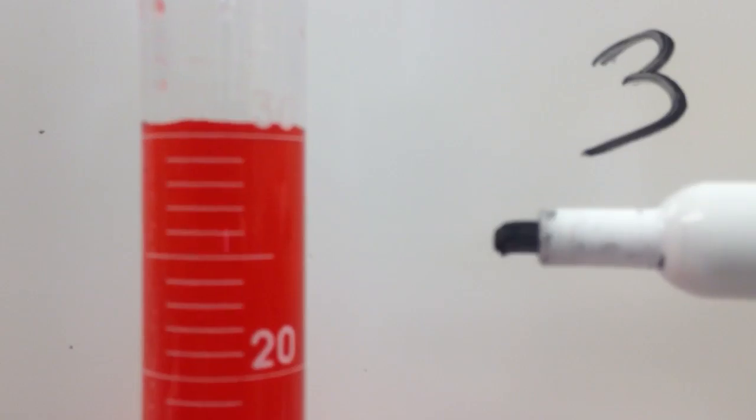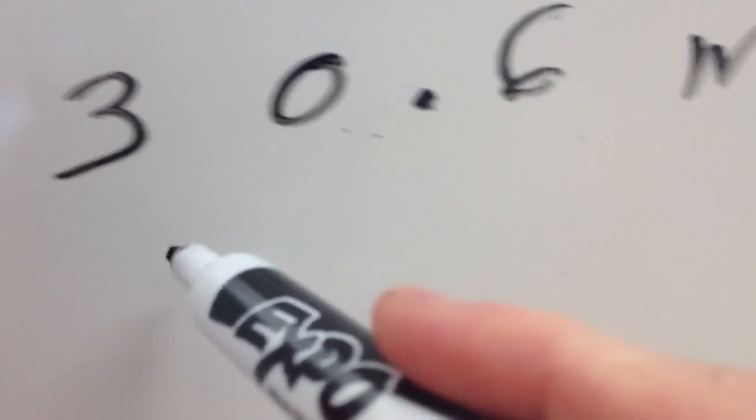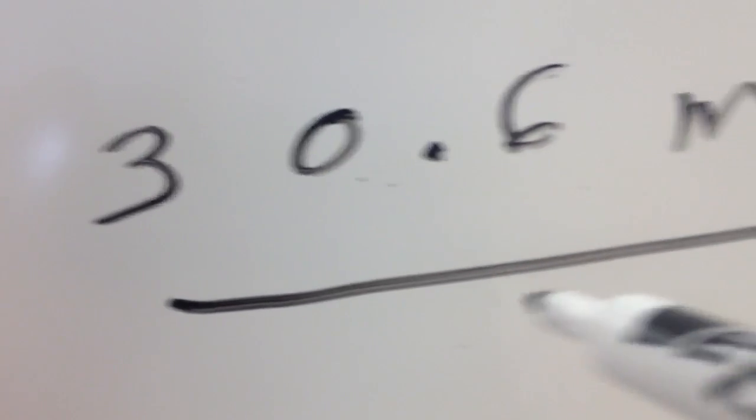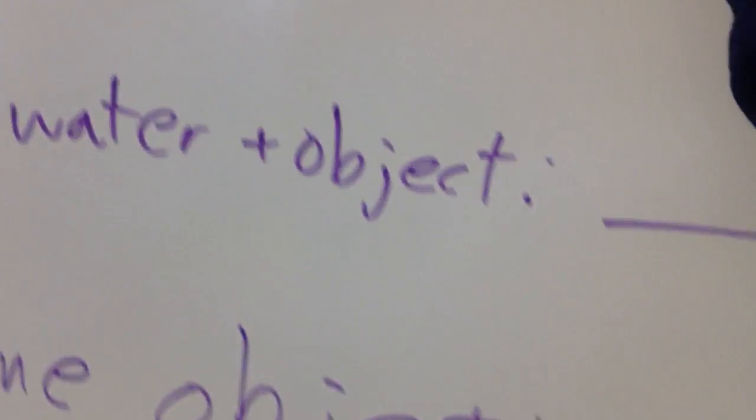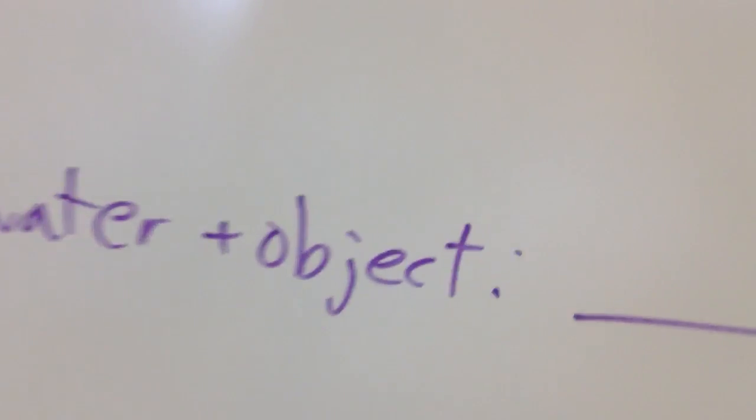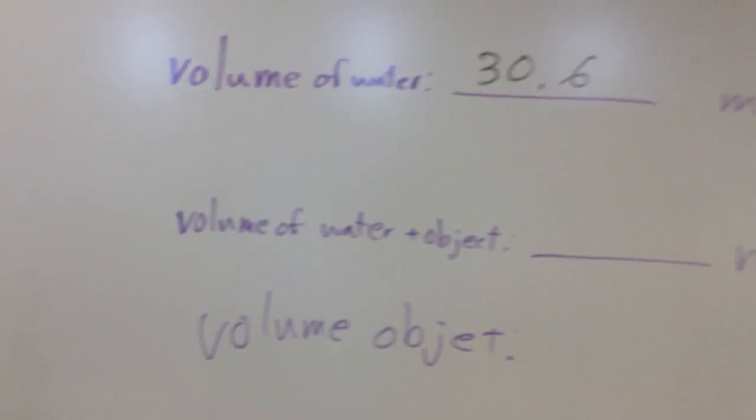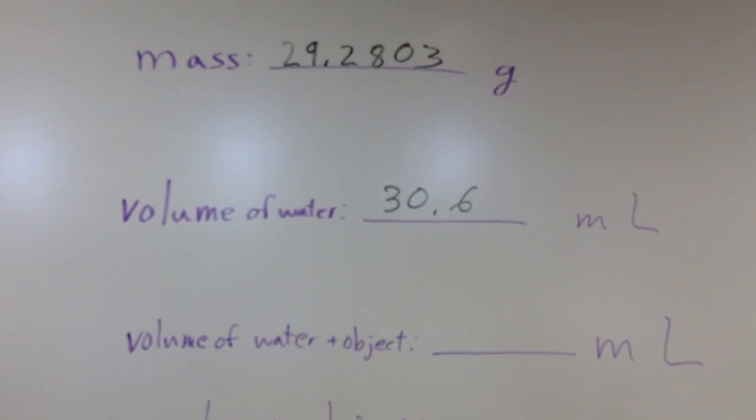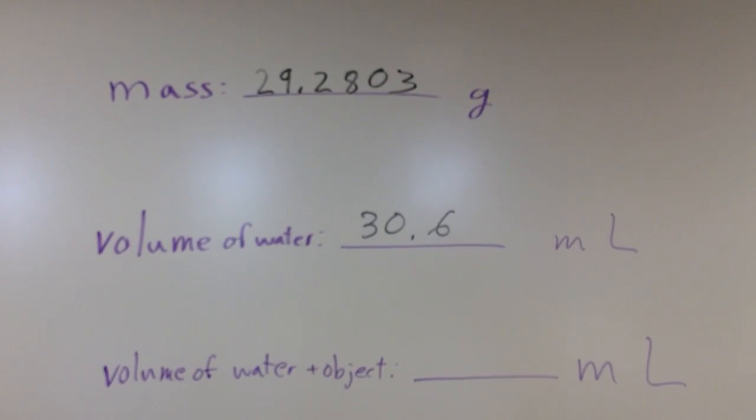So I can estimate one more sig fig than my graduated cylinder is calibrated for. So everything in your lab, in terms of volume, should have at least three sig figs for your volume readings in your graduated cylinder here. So I've got the volume of my water as 30.6 milliliters.